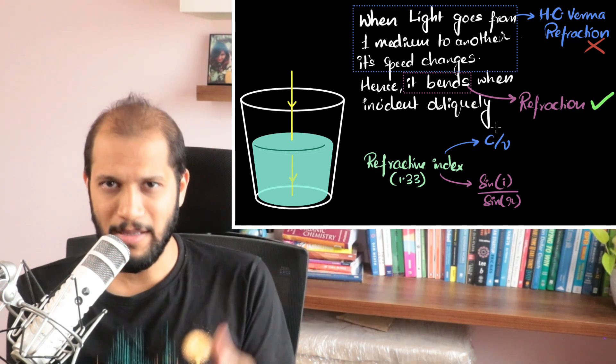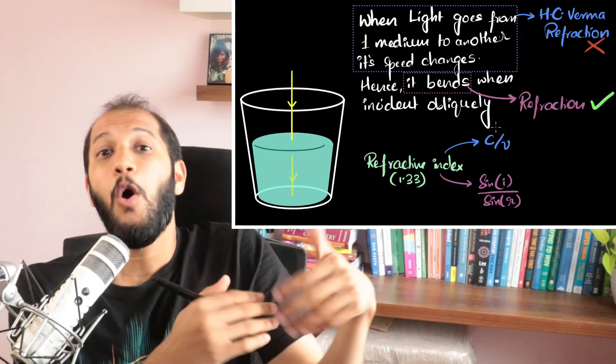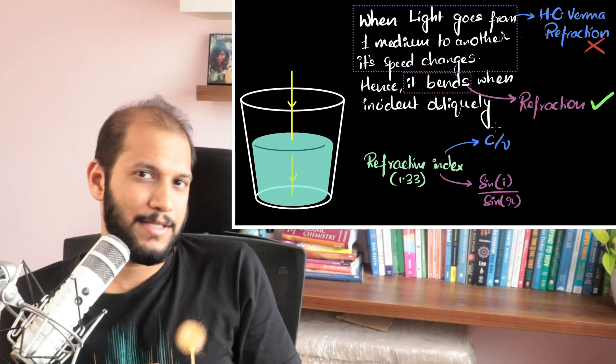it happens to be true that refraction, because it is due to the changes in the speed of light, refractive index also happens to be a number that tells me how much speed of light changes, right?